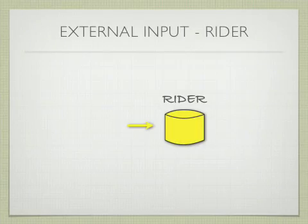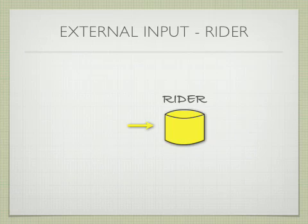The external input for Rider is pretty straightforward and simple. It has three data elements: Age, Sex, and Weight.